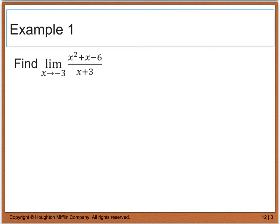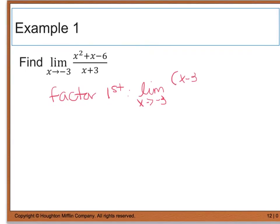Example 1 says to find the limit of the function x squared plus x minus 6, divided by the quantity of x plus 3, and we're taking the limit as x is approaching negative 3. I know that when I plug in negative 3 for x, or do direct substitution, I get the indeterminate form, 0 divided by 0. So what I can do instead is go ahead and factor first. When I factor this, I'm really taking the limit as x is approaching negative 3, and my numerator is going to factor into x plus 3 times x minus 2.